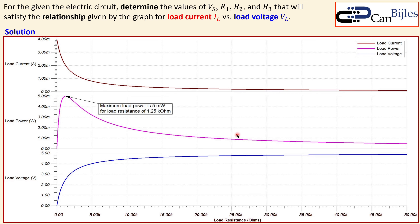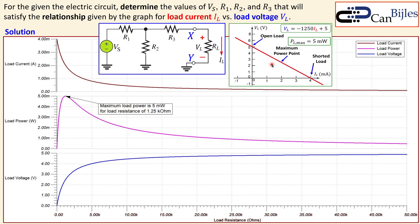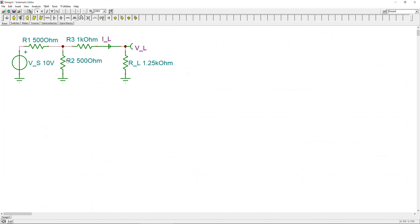Now let's jump into the SPICE simulator to show how to generate these plots — this is very helpful for other circuit analyses. The circuit is already prepared: VS of 10 volts, R1 and R2 of 500 ohms, R3 of one kilohm, a current arrow to measure branch current, a load of 1.25k for maximum power transfer, and a voltage measurement for the load voltage.